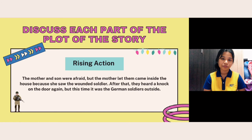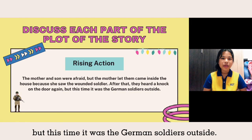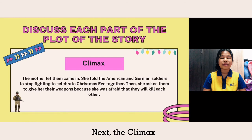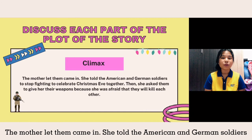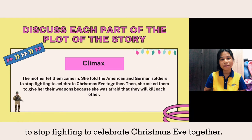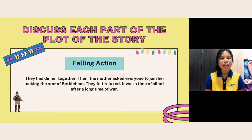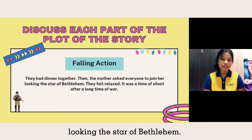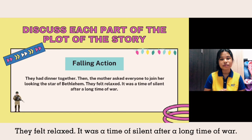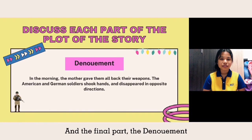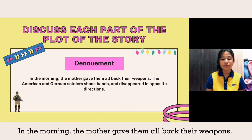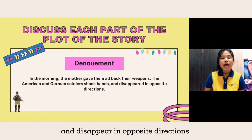After that, they heard a knock on the door again, but this time it was the German soldiers outside. Next, the climax: the mother let them come in. She told the American and German soldiers to stop fighting and to celebrate Christmas Eve together. She asked them to give her their weapons because she was afraid they would kill each other. In the falling action, they had dinner together. Then the mother asked everyone to join her looking at the stars of Bethlehem. They felt relaxed. It was a moment of silence after a long time of war. The denouement: in the morning, the mother gave them back their weapons. The American and German soldiers shook hands and disappeared in opposite directions.